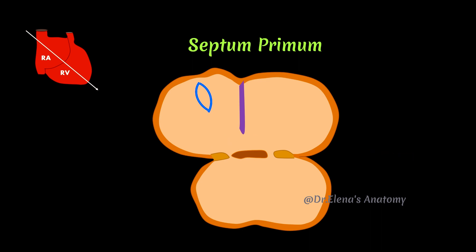Septum primum grows progressively and fused with the septum intermedium. During the seventh week of intrauterine life, apoptosis of cephalic part of septum primum leads to the formation of another opening known as foramen secundum.